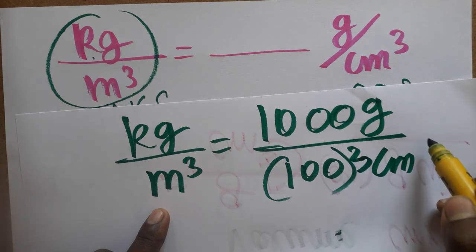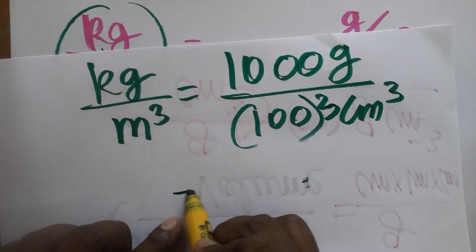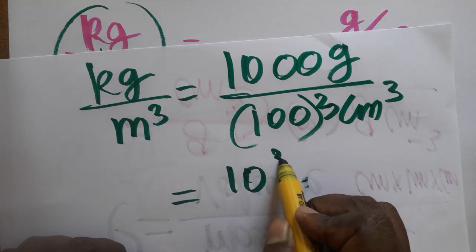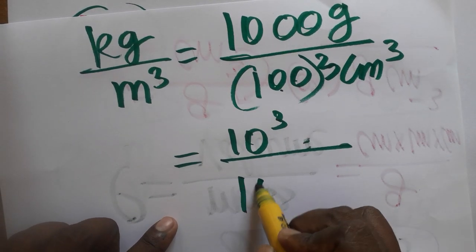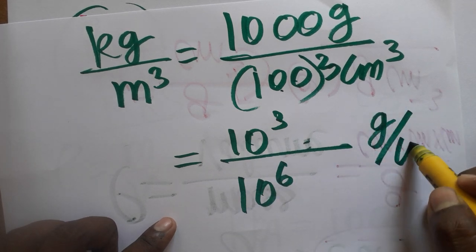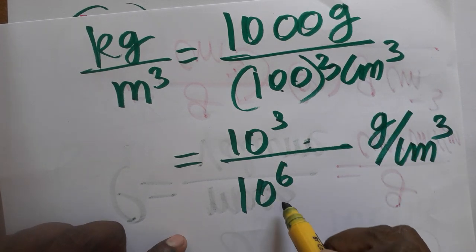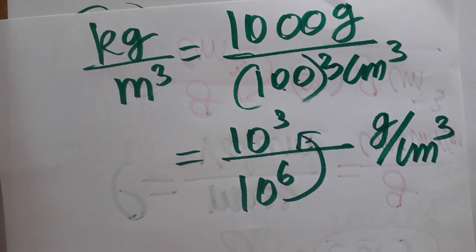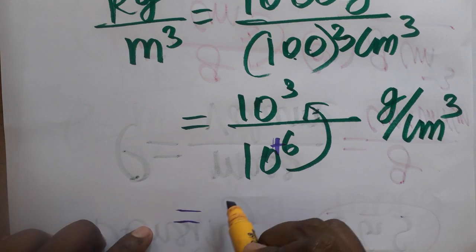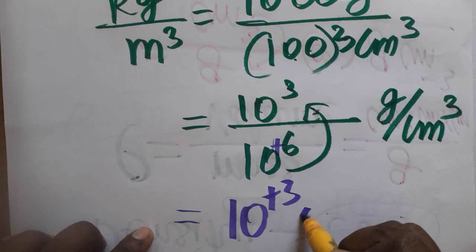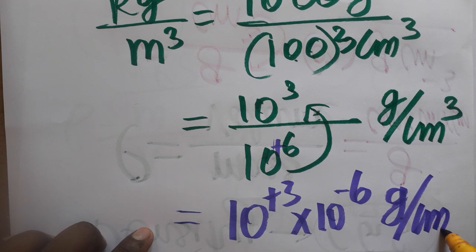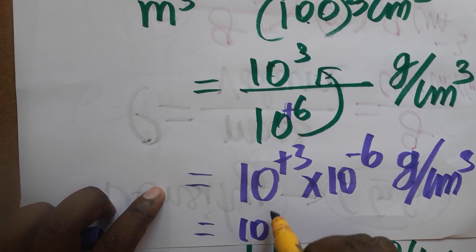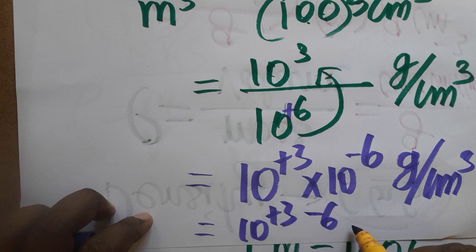Hundred cube gives six zeros, which is ten power six, in centimeter cube. From the denominator, ten power six is taken to the numerator, so we get ten power three into ten power minus six gram per centimeter cube. That gives ten power plus three minus six.